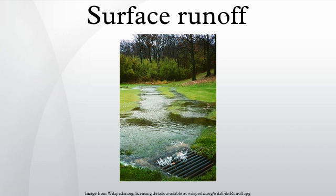When runoff flows along the ground, it can pick up soil contaminants including, but not limited to, petroleum, pesticides, or fertilizers that become discharge or non-point source pollution. In addition to causing water erosion and pollution, surface runoff in urban areas is a primary cause of urban flooding, which can result in property damage, damp and mold in basements, and street flooding.